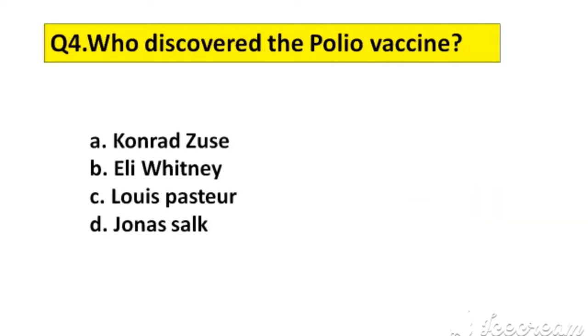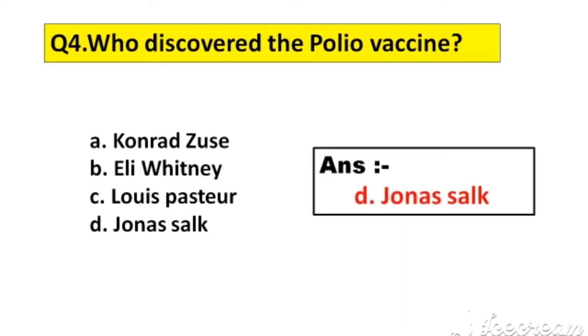Question number 4. Who discovered the polio vaccine? A. Conrad Zuse, B. Ellie Whitney, C. Louis Pasteur, D. Jonas Salk. The right answer is option D, Jonas Salk.